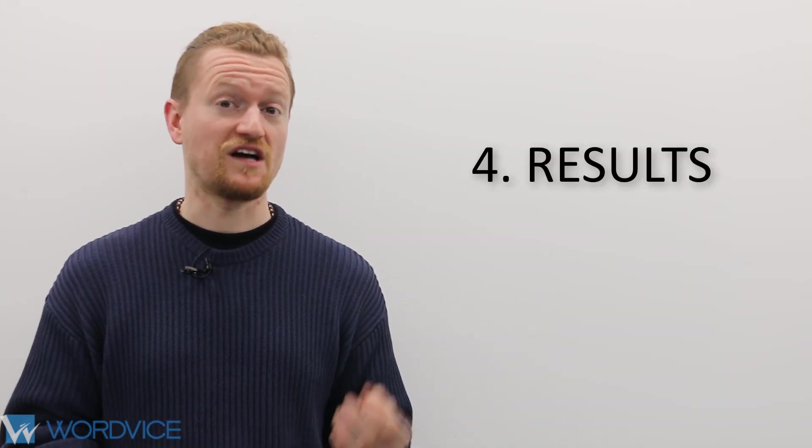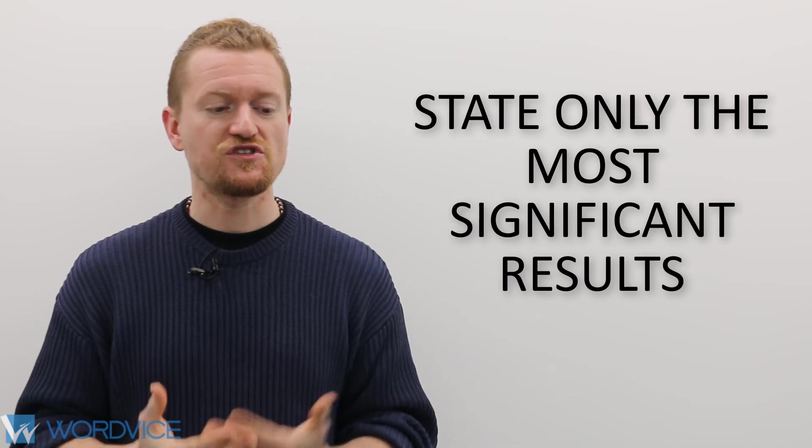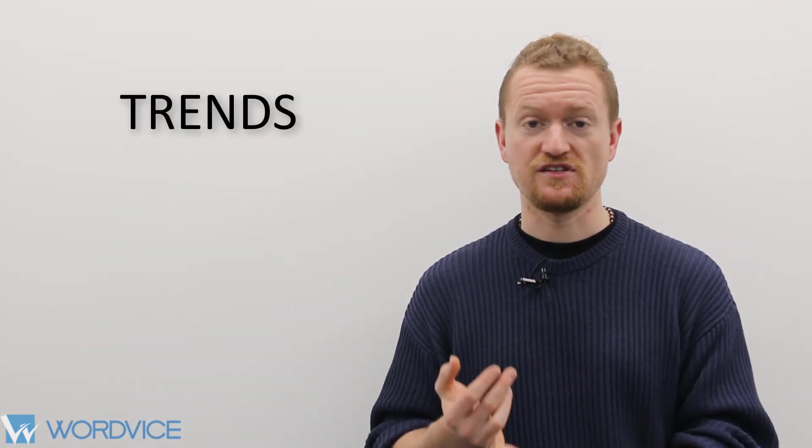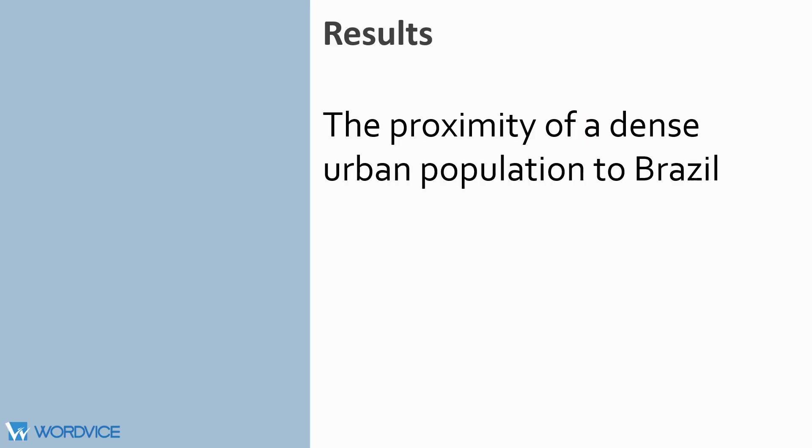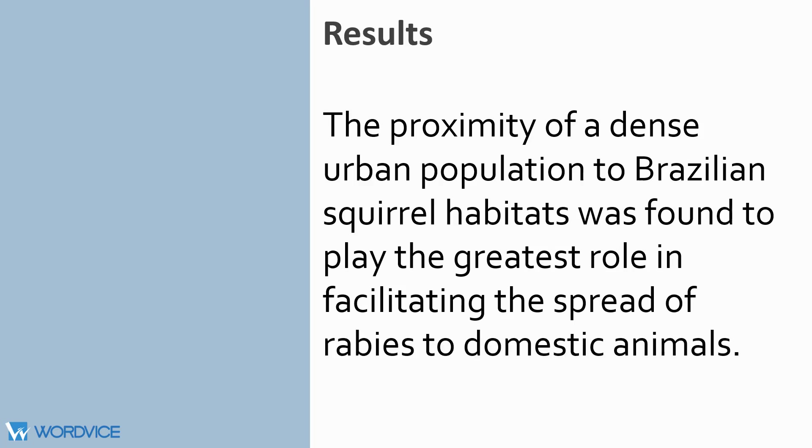The next section of your abstract will be a summary of the results. Just as in the methods section, you should determine what the most significant results were. You should link these results to your problem and your conclusion. Think about what your study yielded in terms of concrete outcomes. For example, trends, figures, correlations between phenomena. Were there any highly unexpected outcomes or were they all largely predicted? Again, because of space, you don't really want to be too detailed here and you want to pull your reader in. So focus on the most significant parts of your results. Let's check in with our Brazilian squirrel friends. The proximity of a dense urban population to Brazilian squirrel habitats was found to play the greatest role in facilitating the spread of rabies to domestic animals. And we've linked our results directly back to the problem we initially asked, which was, what is the role, what is the correlation between urban population and rabies in domestic animals?